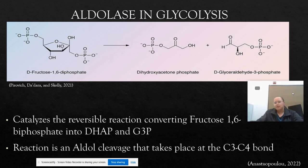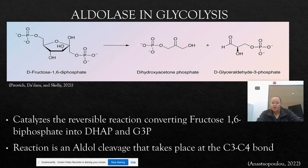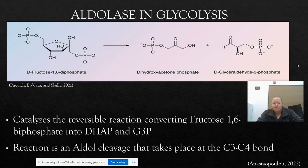Aldolase in glycolysis is very important. It catalyzes the reversible reaction of converting fructose-1,6-bisphosphate into dihydroxyacetone phosphate, or DHAP, and glyceraldehyde-3-phosphate, or G3P. It takes our six-carbon fructose molecule and breaks it into two three-carbon molecules, each containing a phosphate group. It is an aldol cleavage reaction that takes place at the C3-C4 carbon bond in fructose-1,6-bisphosphate.